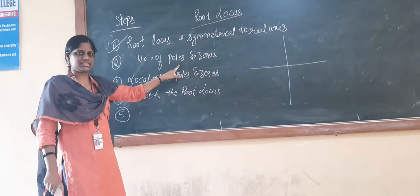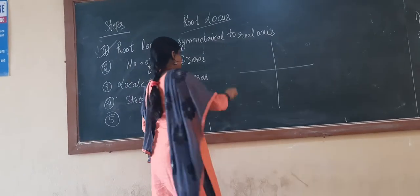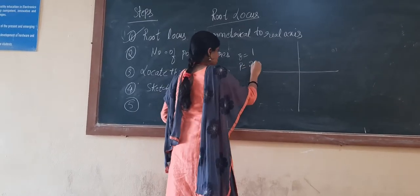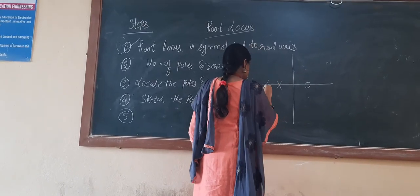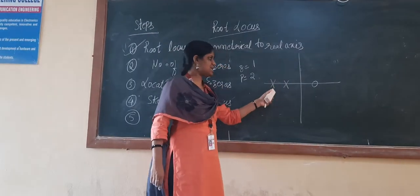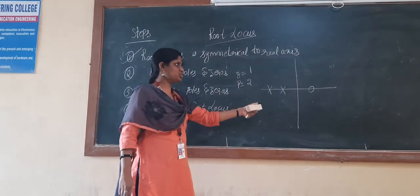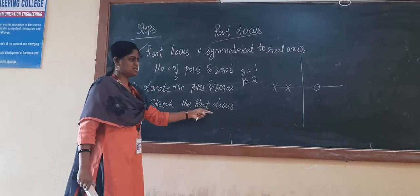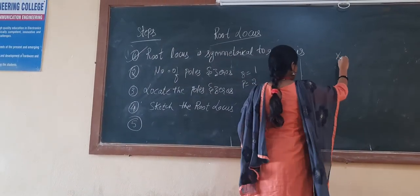After identifying the number of poles and zeros, you need to locate those poles and zeros on the s-plane. Zeros are indicated with symbol Z and poles with symbol P. You mark on the s-plane at which location the zeros and poles are present. The fourth step is to sketch the root locus, starting from the pole and ending at the zero.